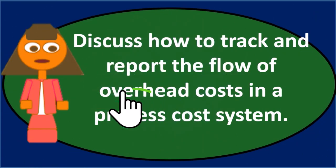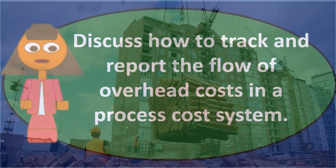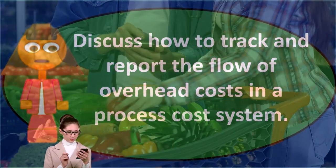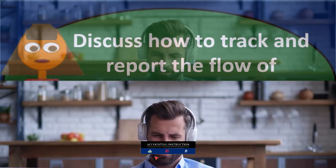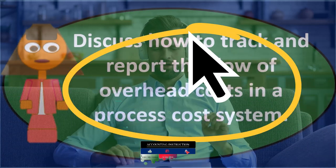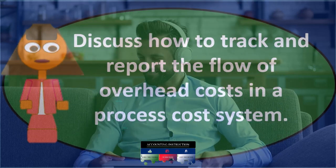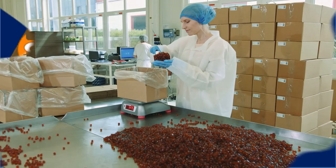We start with raw materials, since that's where things begin — we're converting raw materials into finished goods that we'll eventually sell. When we start production, we transfer raw materials into the work-in-process account and apply anything we can directly to the process, such as direct labor and direct materials. Then we have all the indirect costs — things we cannot apply directly to a particular process.